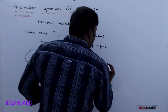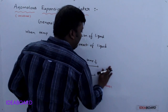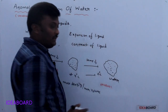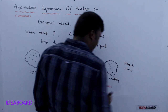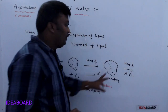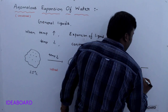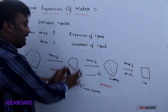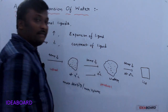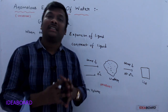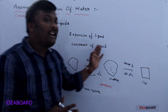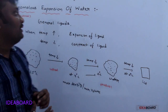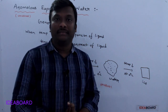If the temperature is reduced further, expansion again takes place. At 0 degrees Celsius, water changes state into ice. So below 4 degrees Celsius, while generally a temperature reduction causes contraction in other liquids, water expands. This unusual behavior is known as anomalous expansion of water.